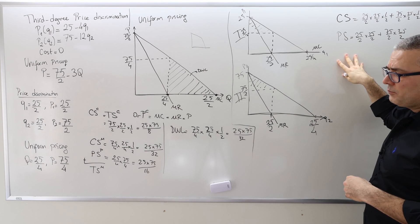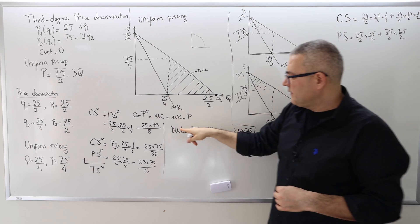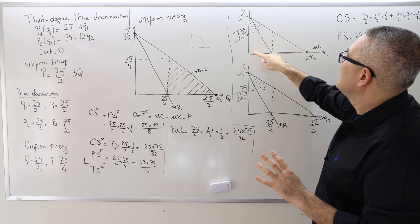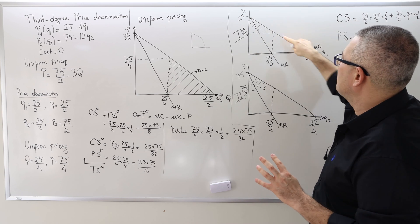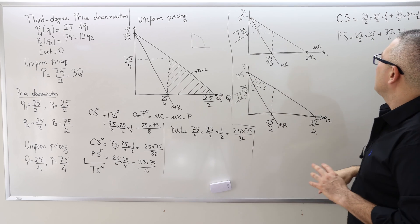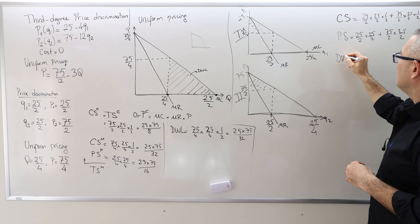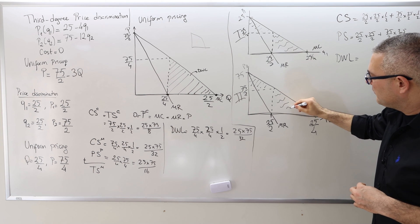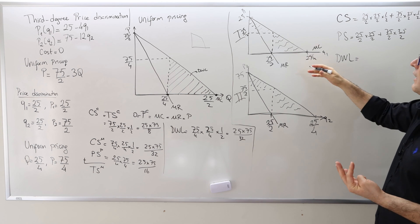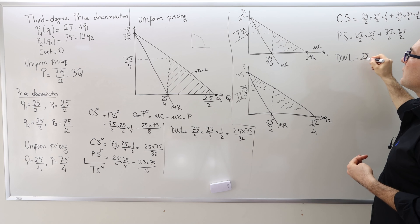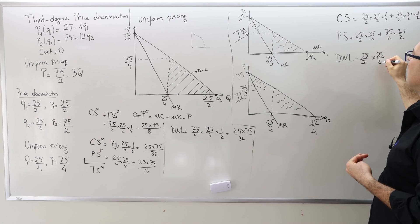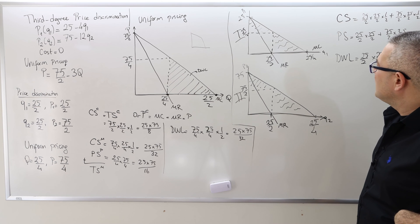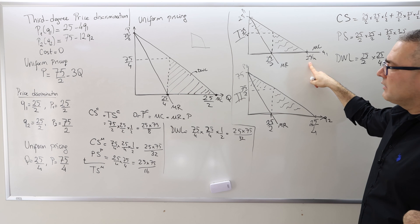The producer surplus is this rectangle — since the marginal cost curve is the horizontal axis, it equals (25/2) × (25/2) + (75/2) × (25/2). That's also the monopolist's profit under price discrimination. We can find deadweight loss by finding the area of the two triangles. But wait — 25/2 is larger than 25/4, so there's a mistake somewhere with the quantities.